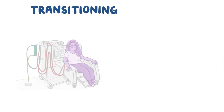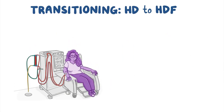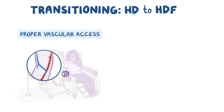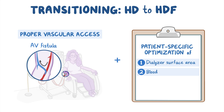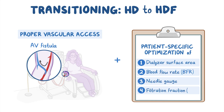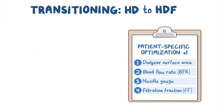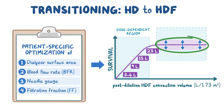Transitioning a patient from HD to HDF requires a properly functioning vascular access, preferably an arteriovenous fistula, and patient-specific stepwise optimization of the dialyzer surface area, blood flow rate or BFR, needle gauge, and filtration fraction or FF to achieve high convection volumes.